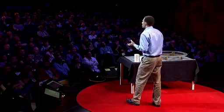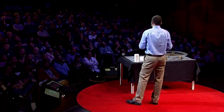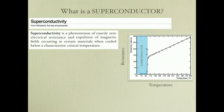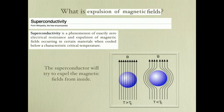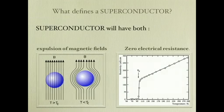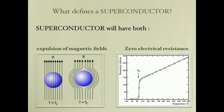Superconductors don't like magnetic fields. So a superconductor will try to expel magnetic fields from the inside, and it has the means to do that by circulating currents. The combination of both effects — the expulsion of magnetic fields and zero electrical resistance — is exactly what defines a superconductor.